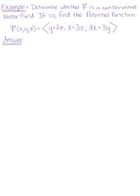Determine if vector F is a conservative vector field. If so, find the potential function. We are given a vector F in R3, so we can let these components be f, g, and h. The first thing we need to do is check if this is conservative.